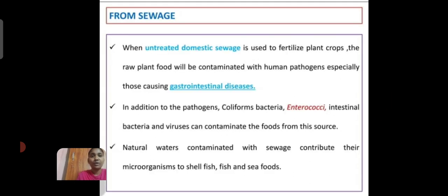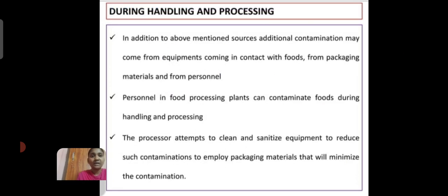From sewage, when untreated domestic sewage is used to fertilize plant crops, the raw plant food will be contaminated with human pathogens, especially those causing gastrointestinal disease. In addition to pathogens, coliform bacteria, for example Enterococci, intestinal bacteria, and viruses can contaminate food from this source. Natural water contaminated with sewage also contributes microorganisms to shellfish and seafood during handling and processing.